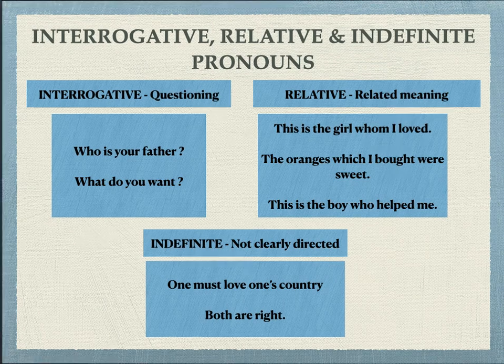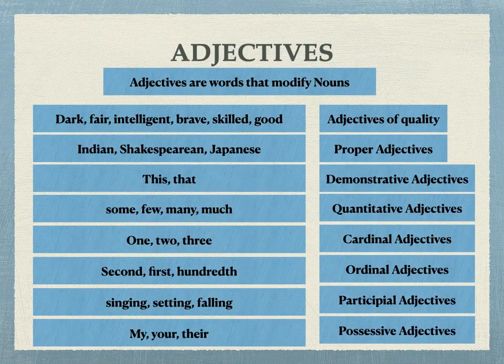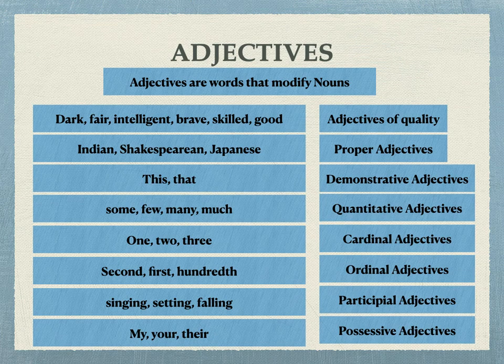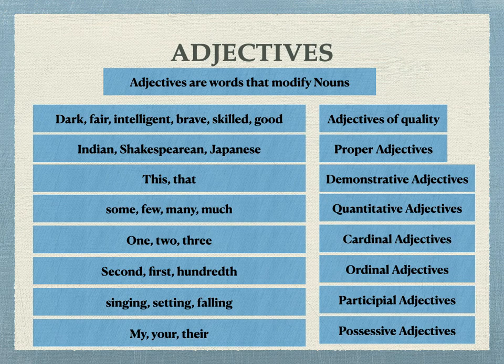We are now moving on to adjectives. Adjectives are words that qualify or modify nouns. Words like dark, fair, intelligent — 'She is an intelligent girl', where 'girl' is a noun and 'intelligent' qualifies it. 'He is a brave boy' — 'brave' qualifies the noun 'boy'. 'He is a very skilled actor', 'She is a very good person.' All these are adjectives of quality.